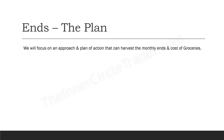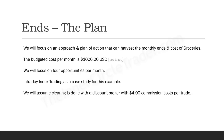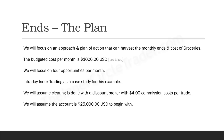Just a quick summary: we're focusing on the cost of groceries as a case study, and the budget was $1,000. We're aiming for $1,000 pre-taxed, focusing on primarily four opportunities per month. NJ index trading as a case study — specifically the e-mini S&P. We're assuming clearing is done by a discount broker with $4 commissions per trade, and the account is $25,000 US dollars to begin with.